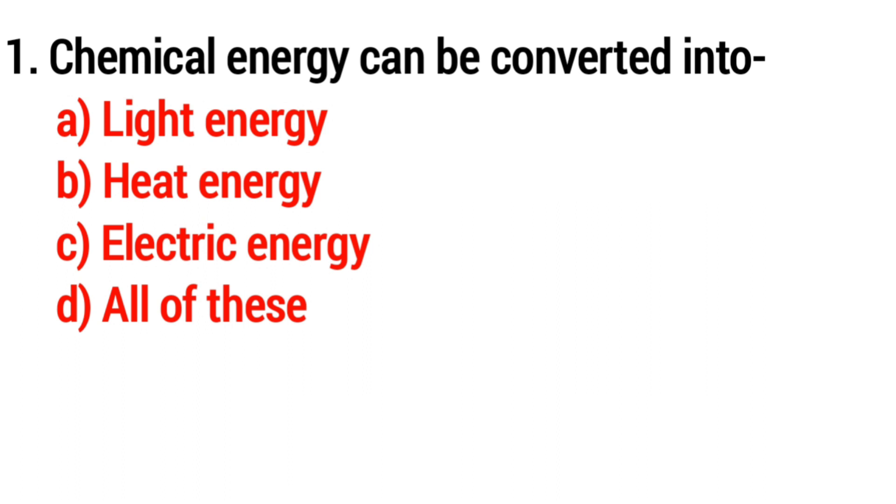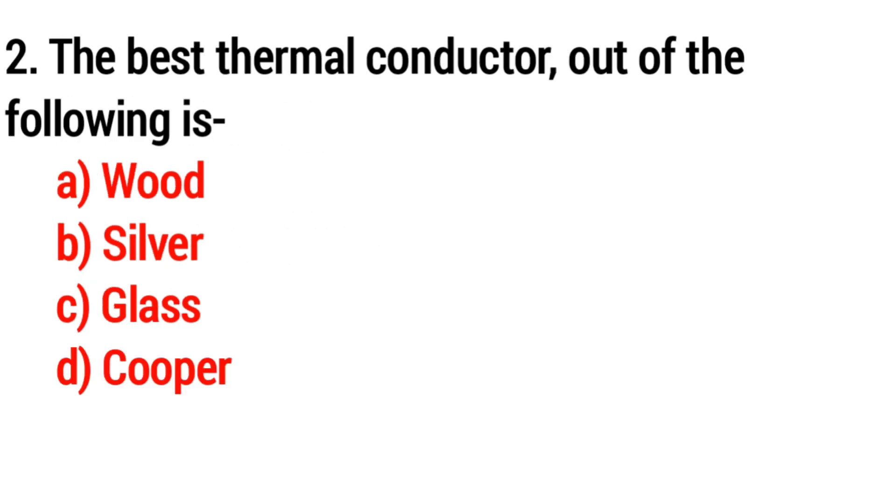Question number one: Chemical energy can be converted into option A light energy, option B heat energy, option C electric energy, option D all of these. The correct answer is option D, all of these.